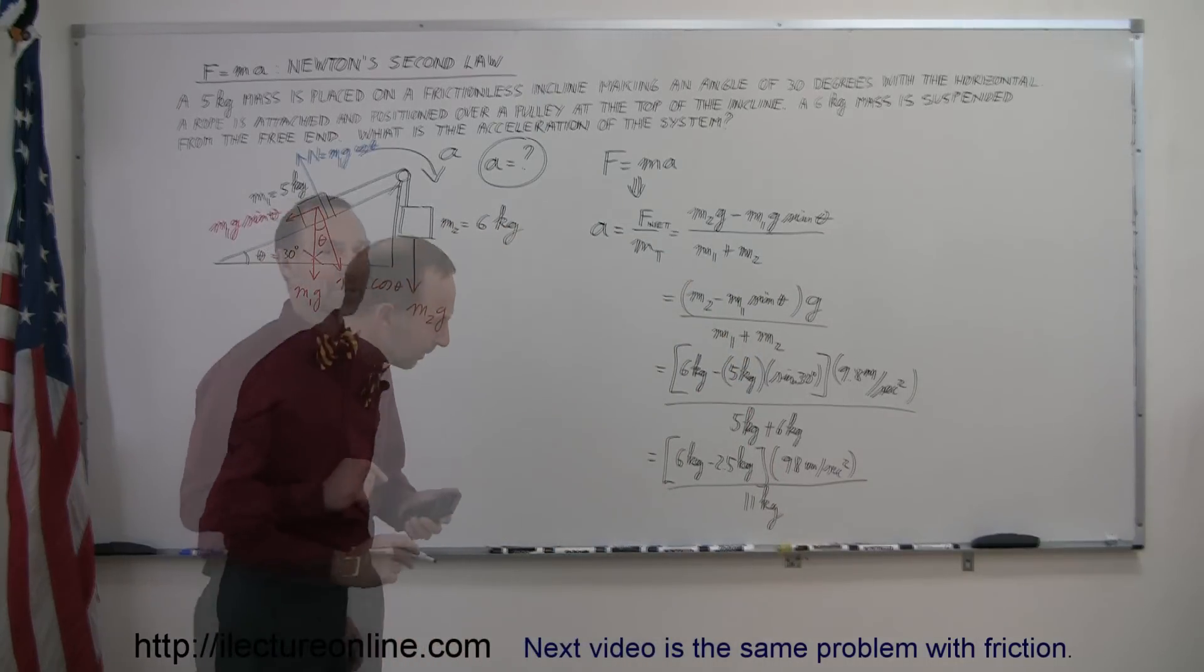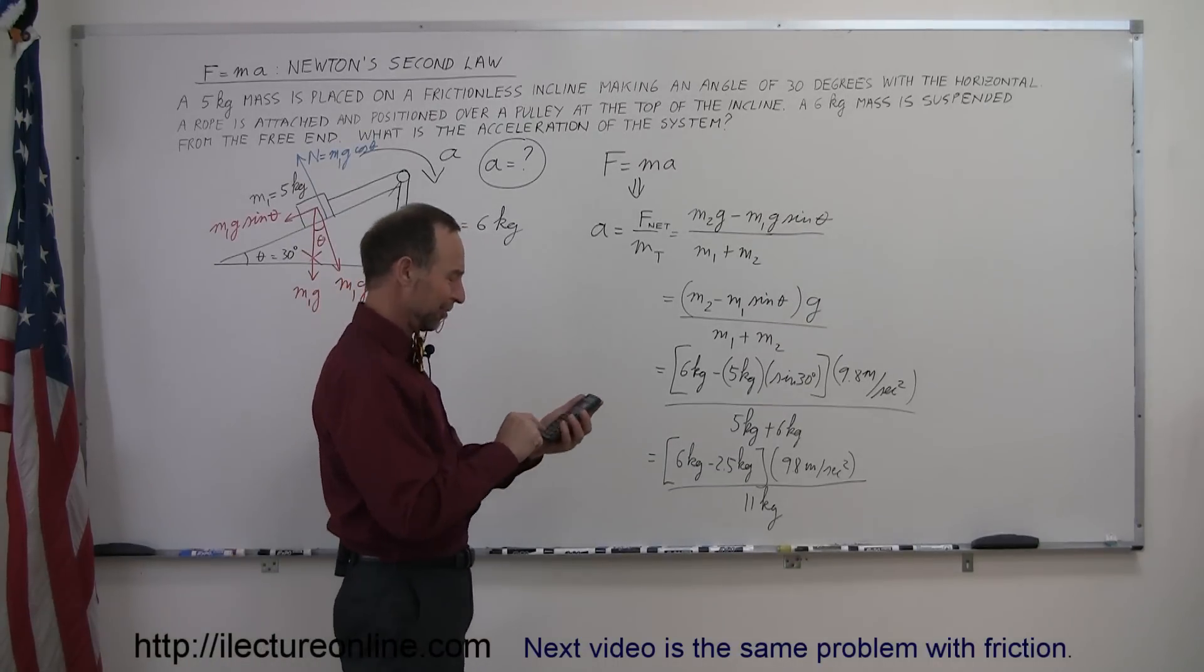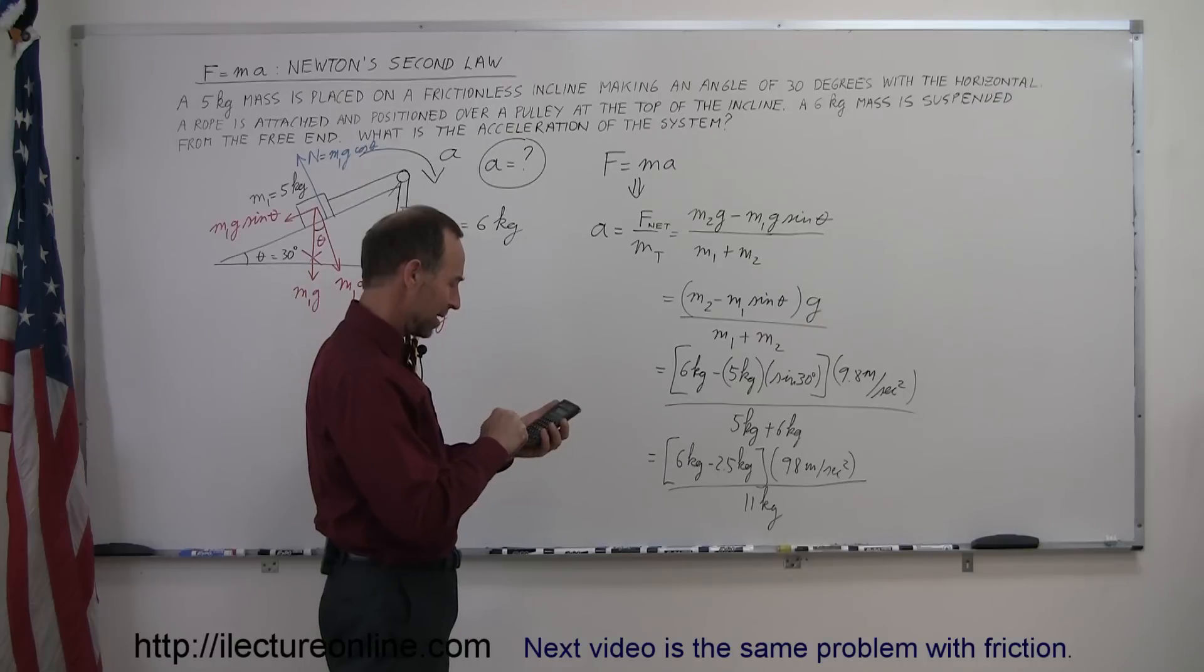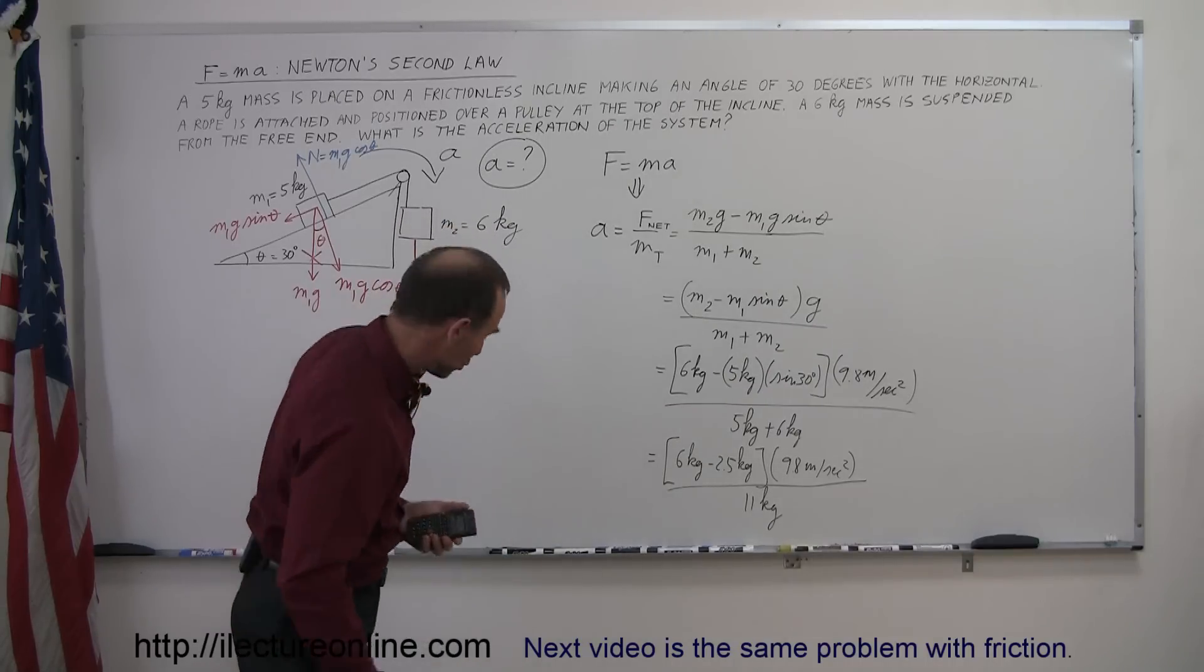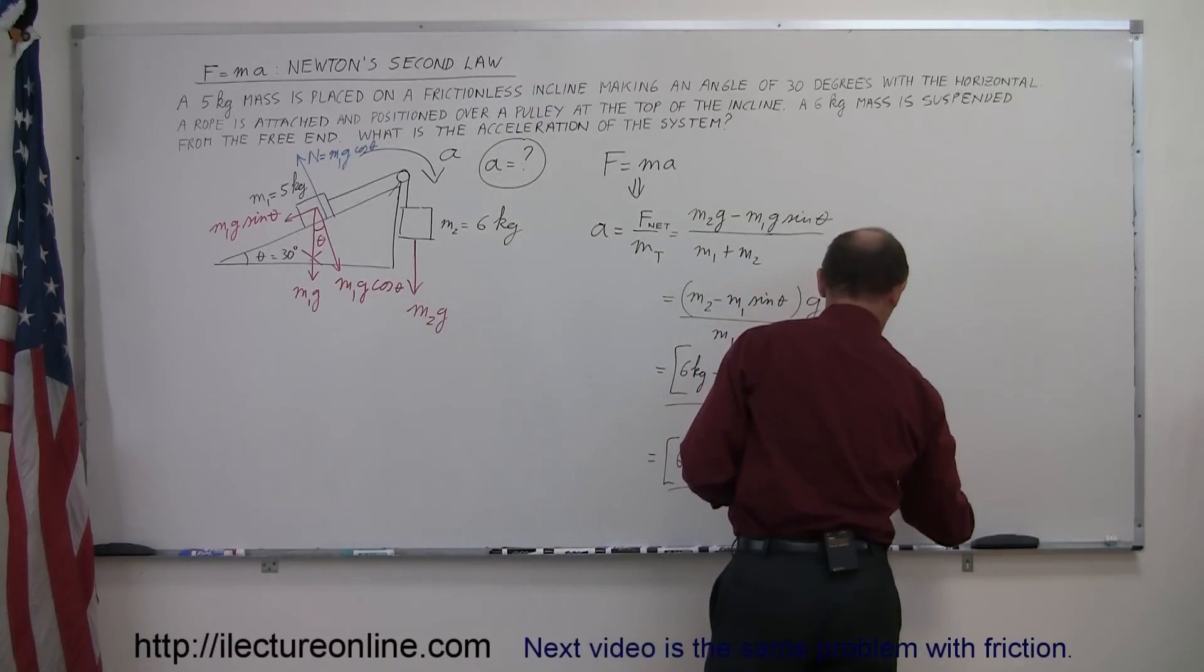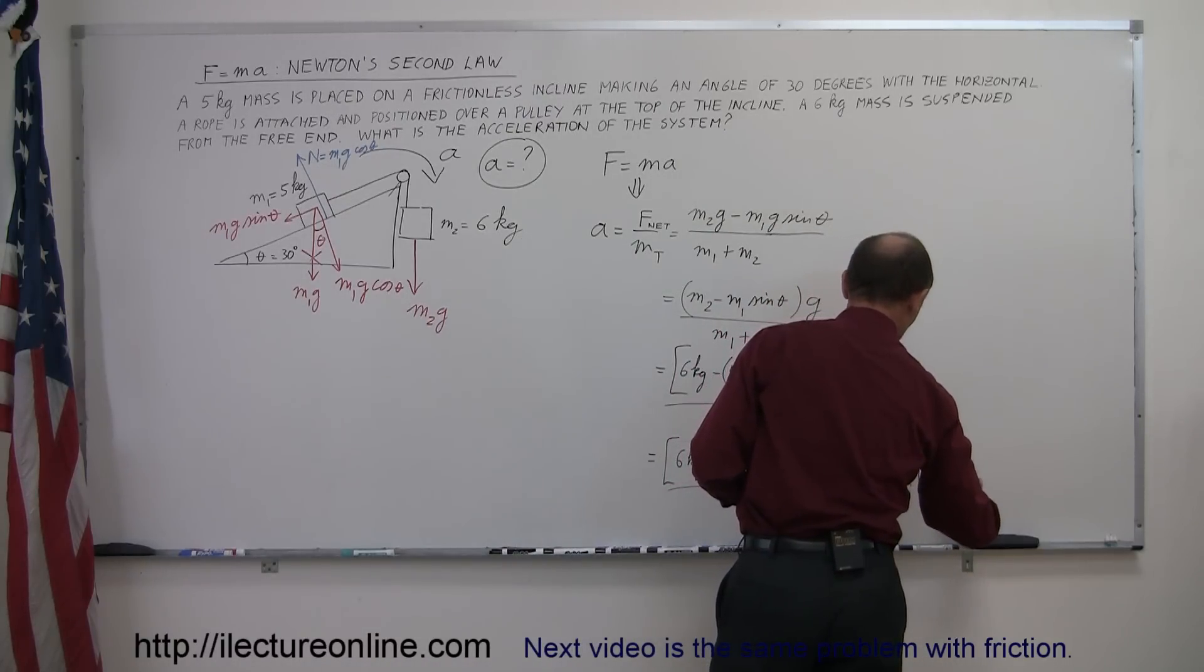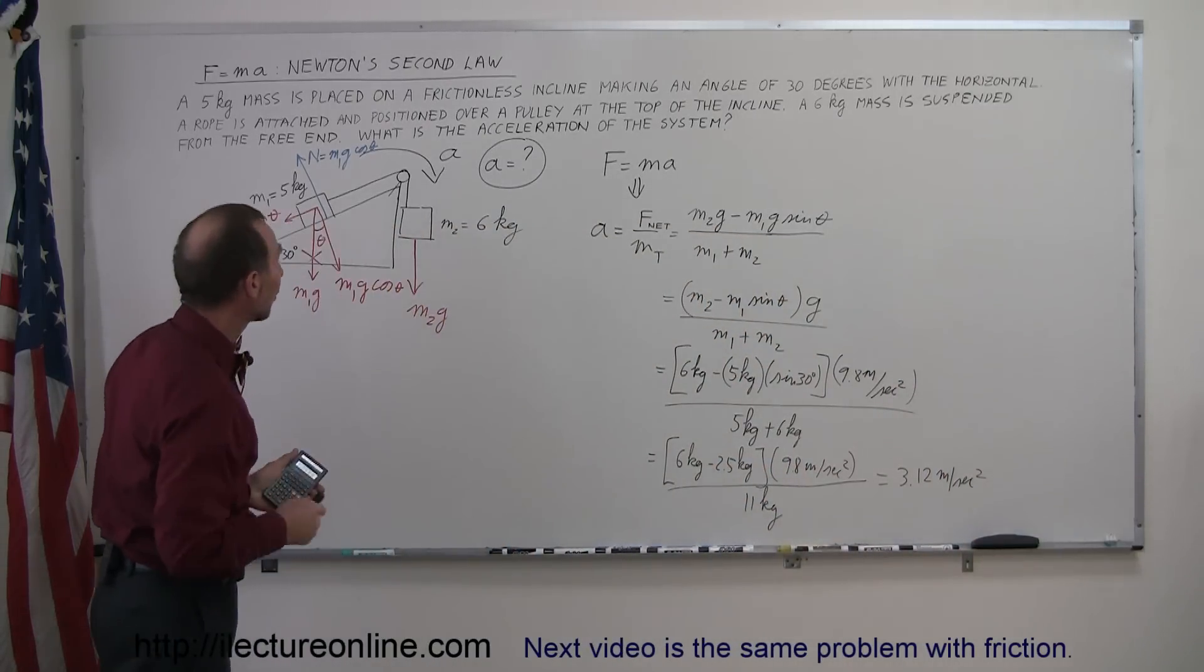Now we need a calculator. I can work out the answer here. So we have 6 minus 2.5, that's 3.5 times 9.8, and we divide that by 11, and we get 3.12 meters per second squared. Those are the proper units of acceleration.